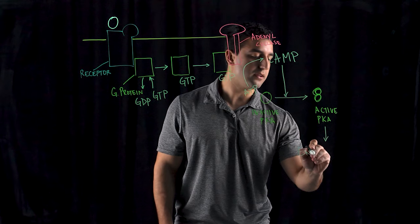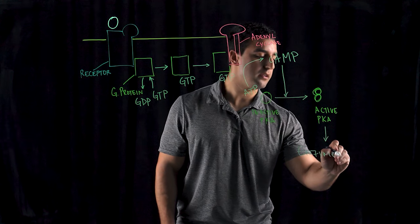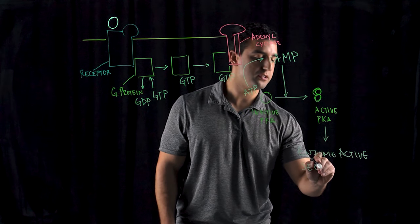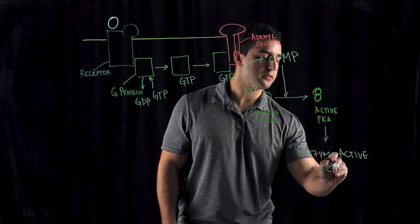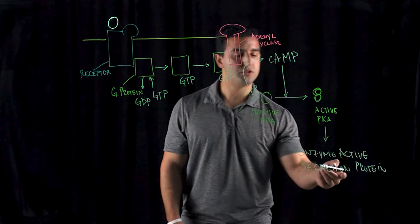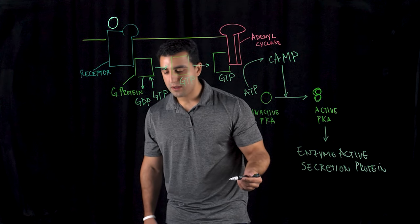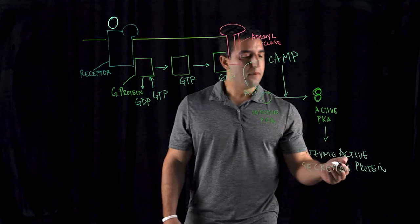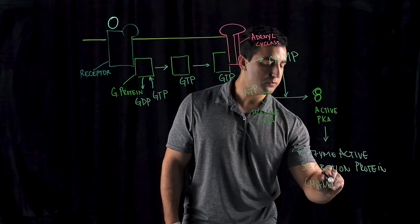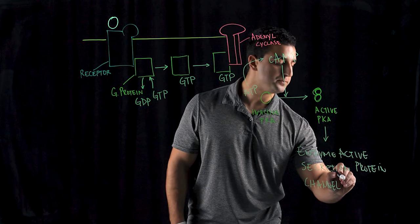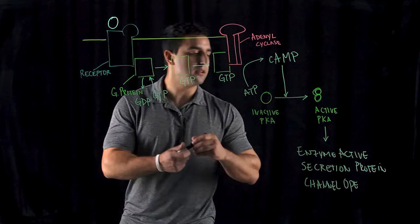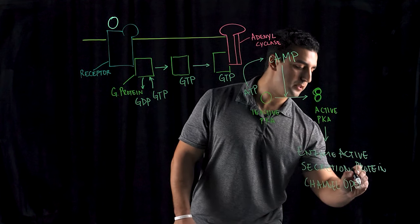You have enzymatic activity, so enzymes begin to work. You have certain protein secretions. This is due to activation of transcription and translation. Also, channels can be opened - certain sodium channels and potassium channels can open, triggering a change in the gradient of the potential here.